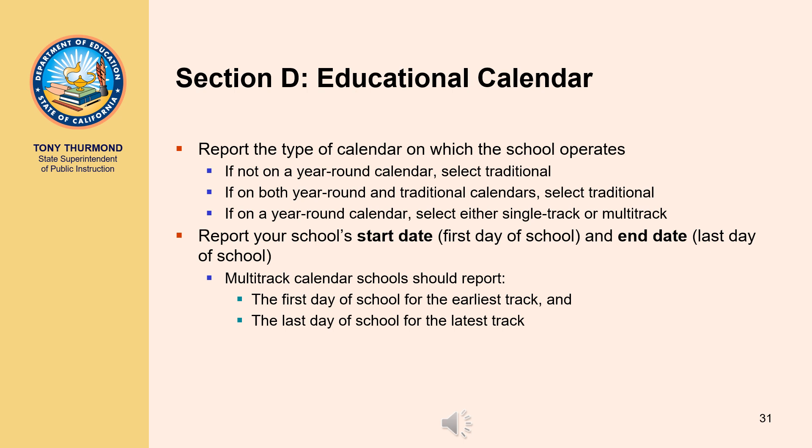If the school does not operate a year-round calendar, only select traditional. If the school offers both year-round and traditional calendars, select traditional. If the school operates on a year-round calendar, select either single track or multi-track. Report the school's start and end date for the school year. The start date should represent the first day of instruction and the end date should represent the last day of school. For schools operating on a multi-track calendar, the start date should represent the first day of school for the earliest track.